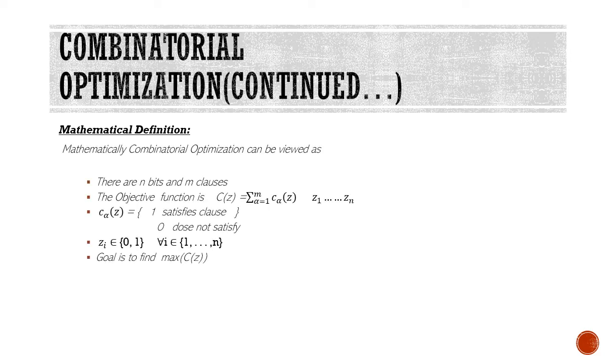Let's come to the definition of combinatorial optimization. Combinatorial optimization consists of an objective function C(z) with n bits and n clauses. C(z) is a function of C_alpha(z), where C_alpha(z) is 1 when it satisfies a clause and 0 when it doesn't satisfy a clause. And z is the bit string which belongs to {0,1} for all the bits that belong to the set. Our goal is to find max or min of C(z).